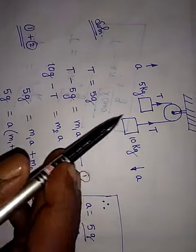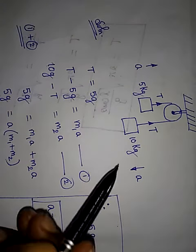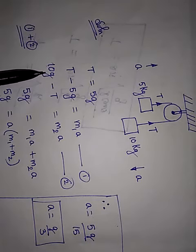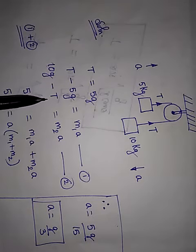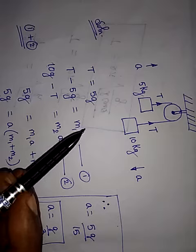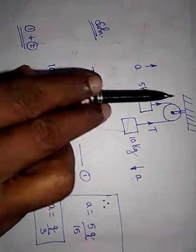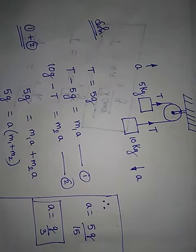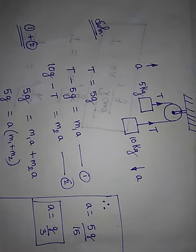Now, we have this 10 kilogram mass. So it moves in this direction. 10 kilogram into G minus T is equal to M2A. This is second equation. Now, note down the sign because this is going against the gravitational pull, whereas it is moving towards the gravitational pull. Therefore, the sign change.